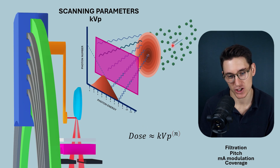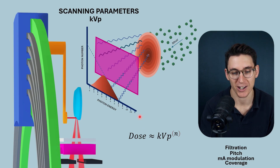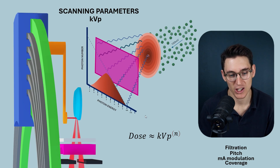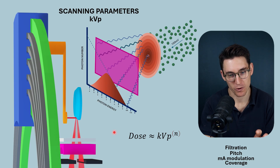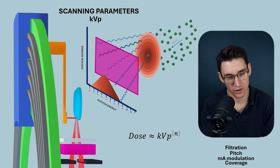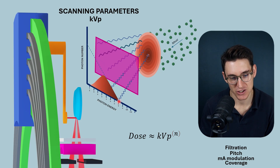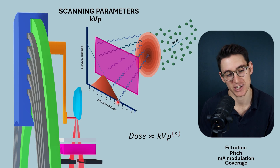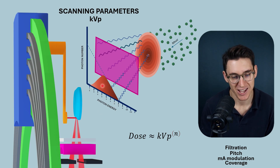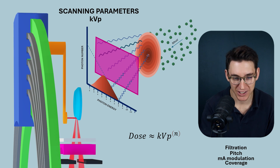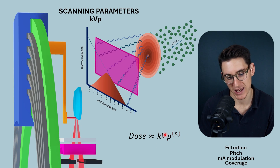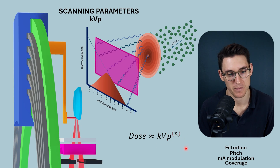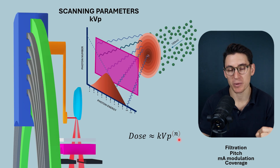Watch what happens when I change the KVP from 80 keV to 100 keV — see how the x-ray spectrum has shifted and the area under the curve has changed. Going back from 100 to 80, our graph gets much smaller: our maximum photon energy gets smaller, the area under the curve gets smaller, and as a result the dose gets lower. As we increase KVP, we increase dose to the patient, roughly proportional to KVP to the power of 2.5 or 2.6.